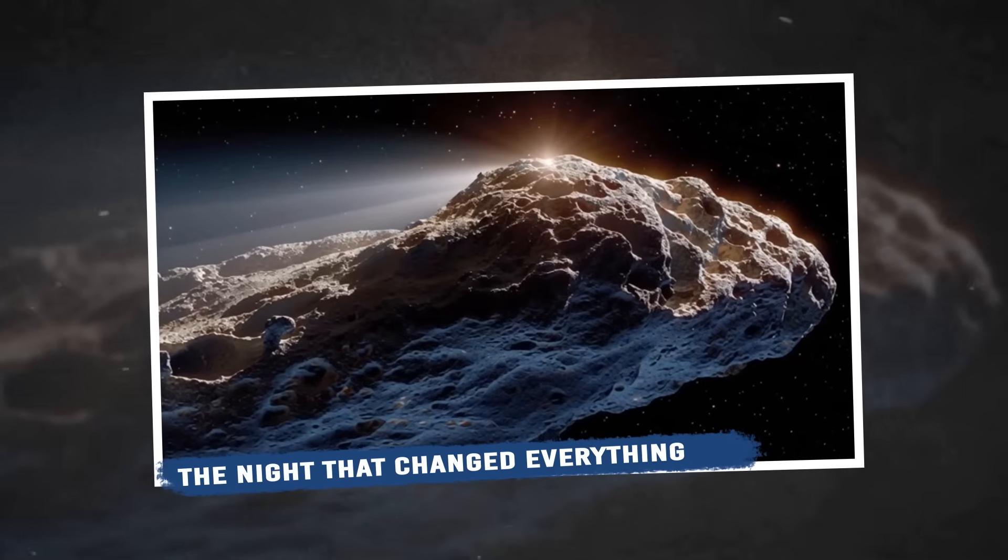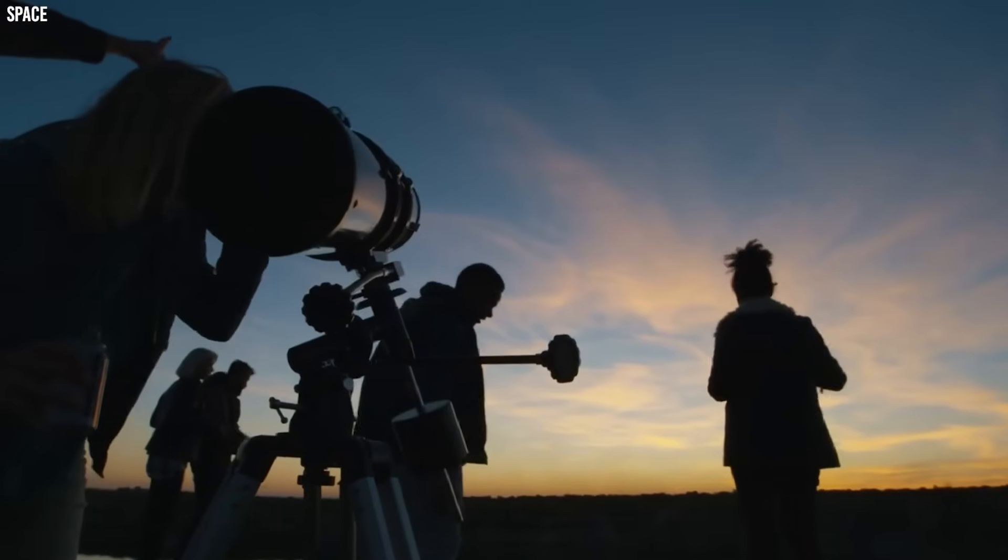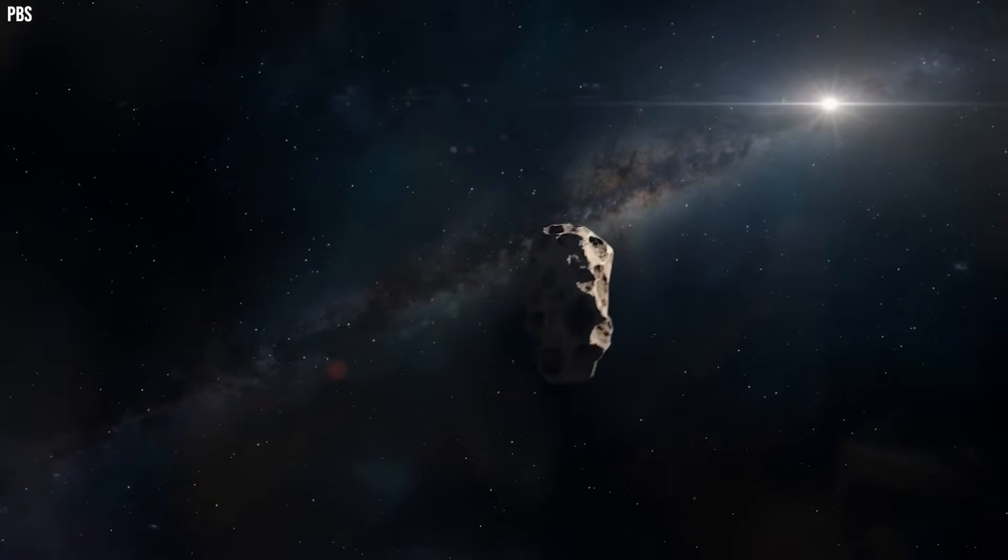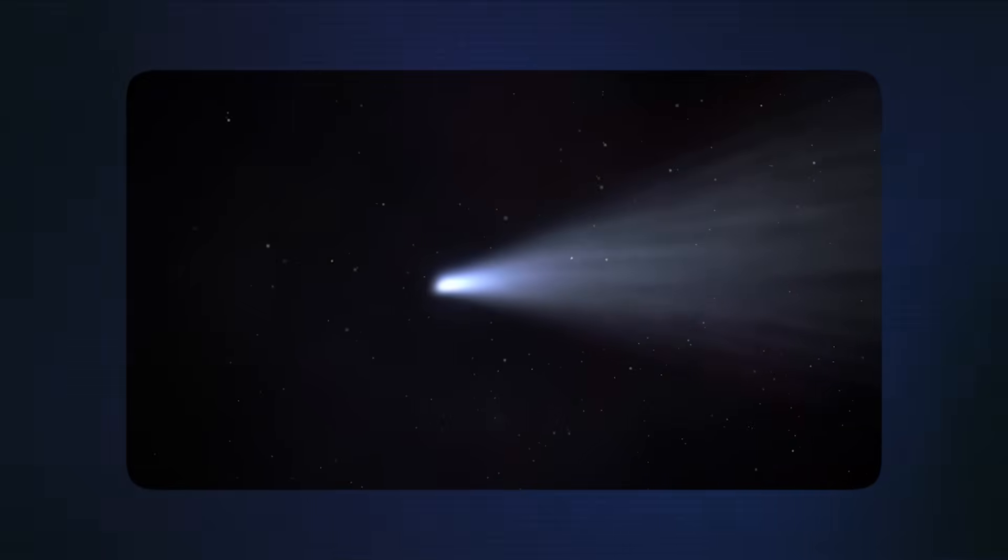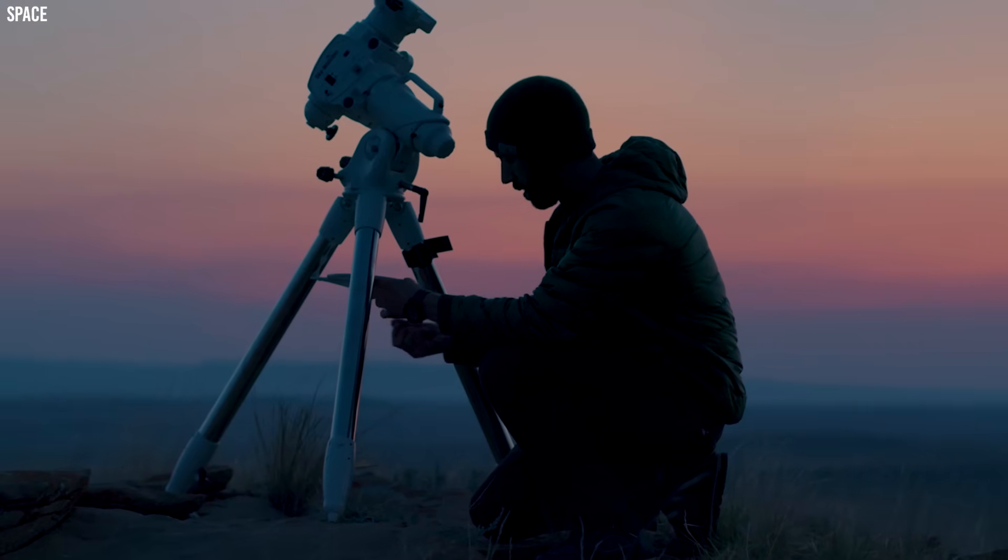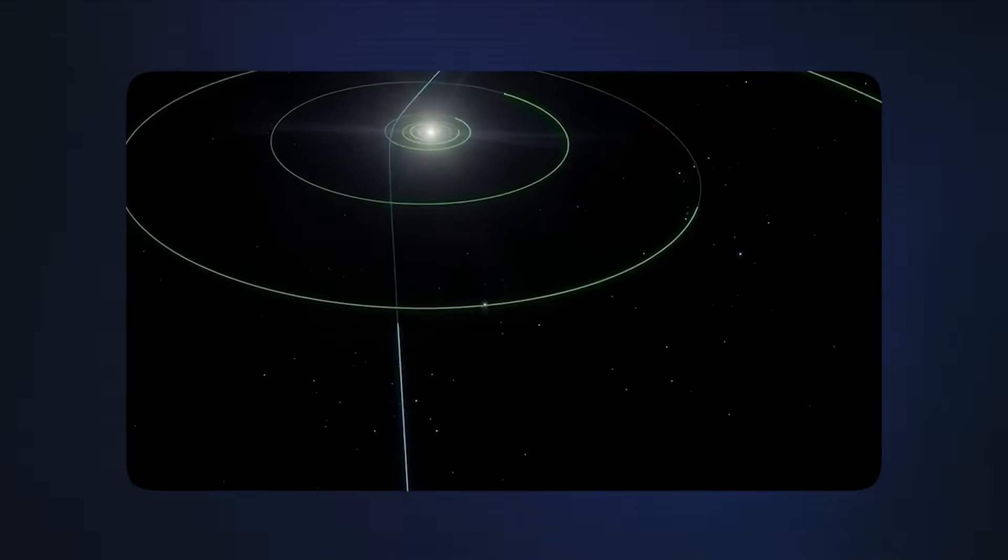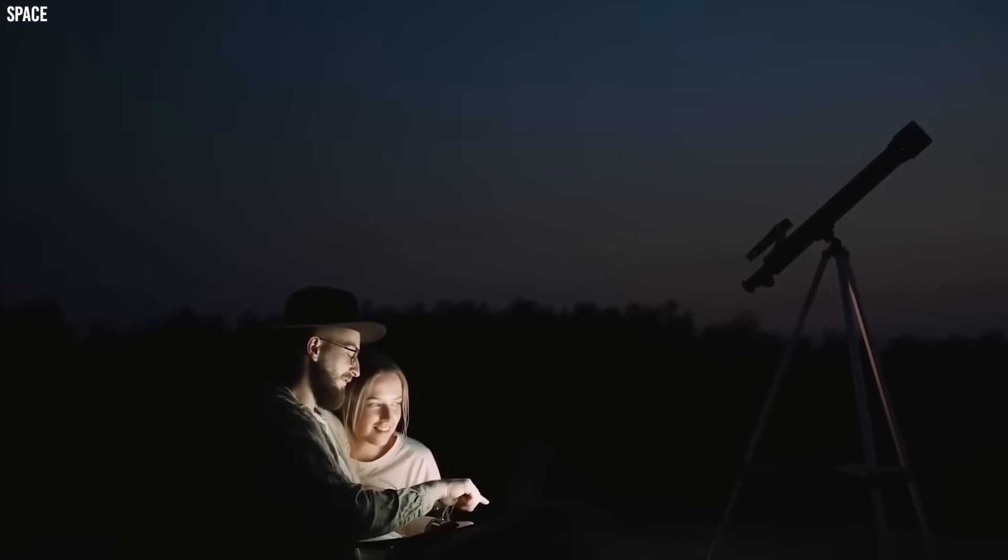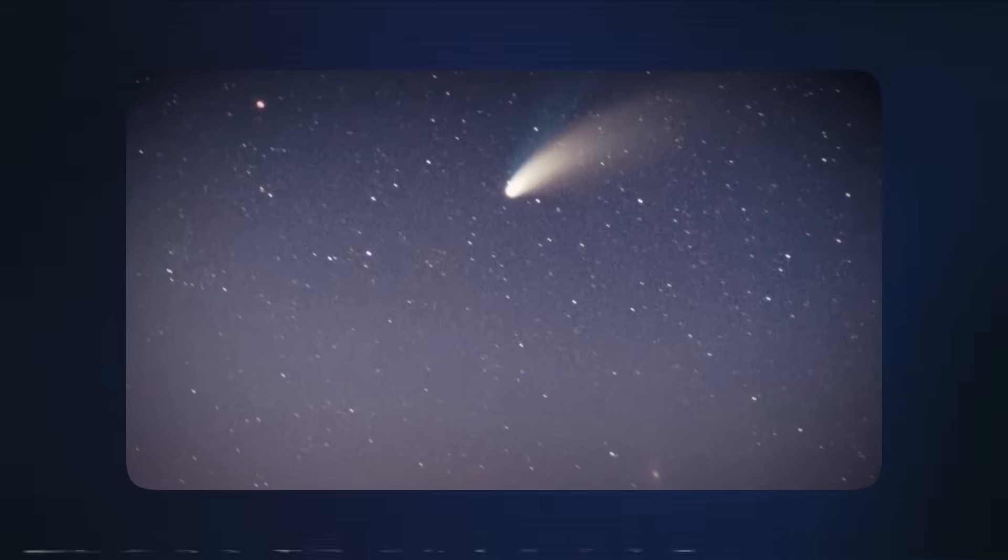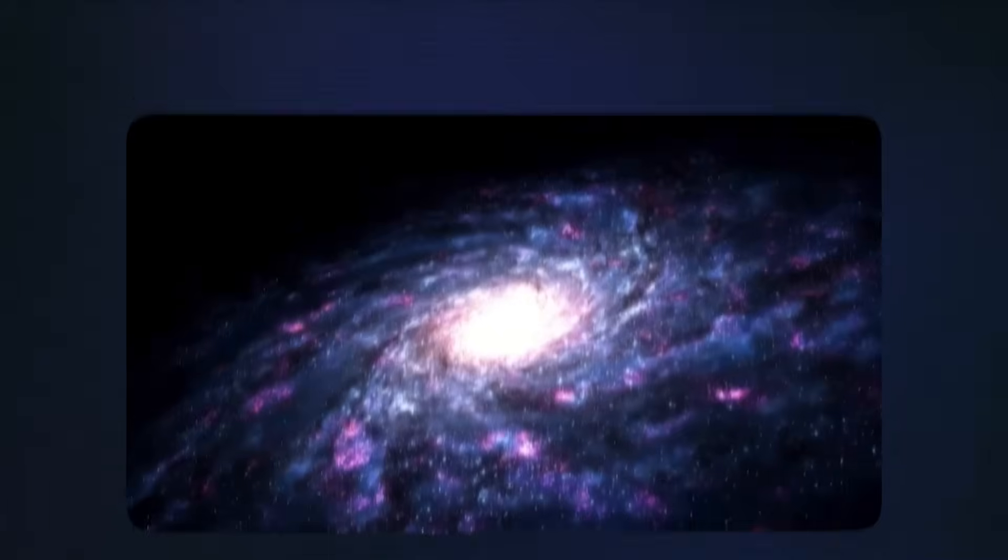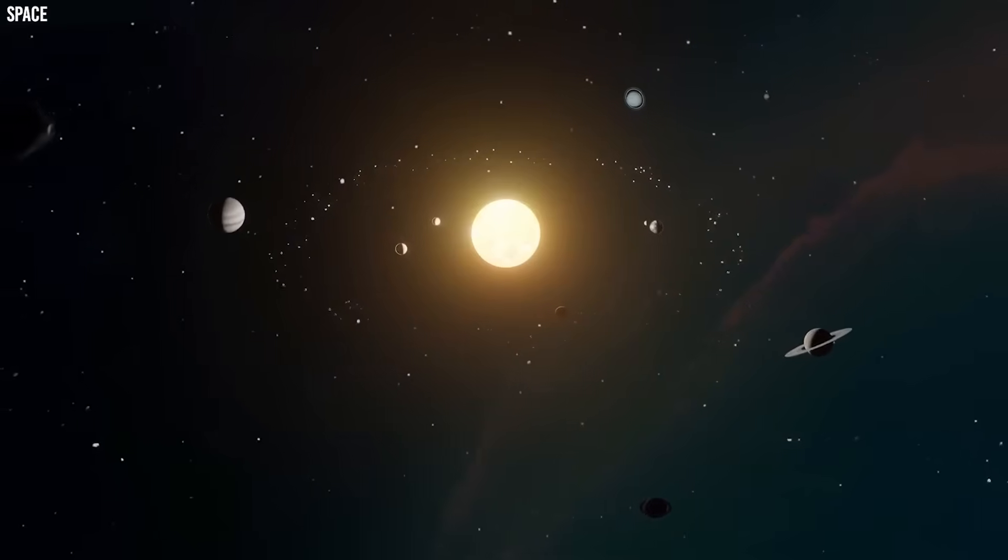The night that changed everything. Amateur astronomer Mitsunioritra was having a typical evening at his telescope on November 22nd, 2025. He was photographing deep space objects, hoping to capture something interesting for his collection of astronomy images. When he pointed his equipment toward a distant galaxy called NGC 4454, he expected to get just another routine shot of the cosmos. Instead, he accidentally captured something that would ignite the biggest scientific controversy since we first discovered planets orbiting other stars.